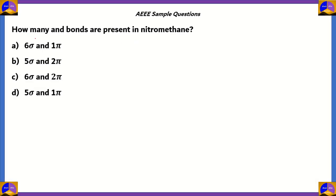Let's look at another question. How many sigma and pi bonds are present in nitromethane? You have 6 sigma 1 pi, 5 sigma 2 pi, 6 sigma 2 pi, and 5 sigma 1 pi. First, let's find out the structure of nitromethane. Nitromethane's chemical formula is CH3NO2, but just writing NO2 doesn't make it correct, so we will write plus on nitrogen and minus on oxygen, and here's the reason why.